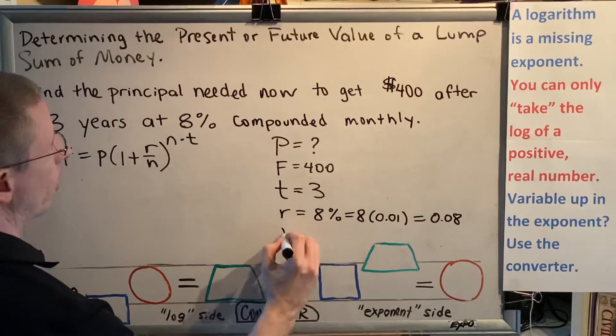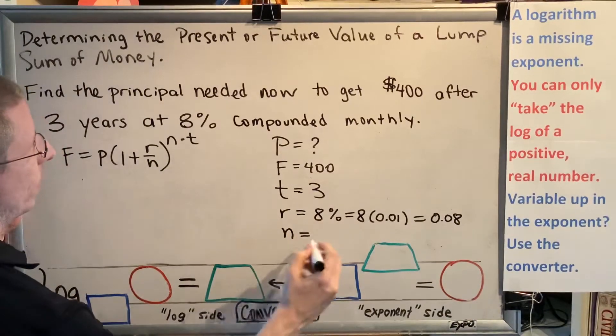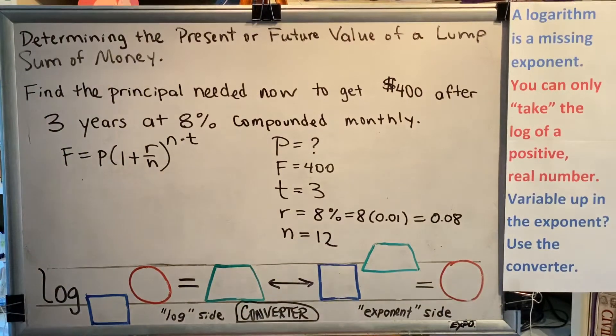Compounded monthly. There are 12 months in a year. That tells me that n is 12 for this problem. Let's plug in.